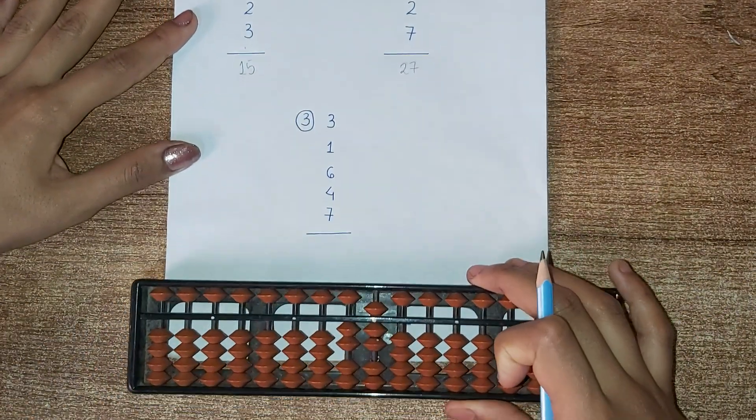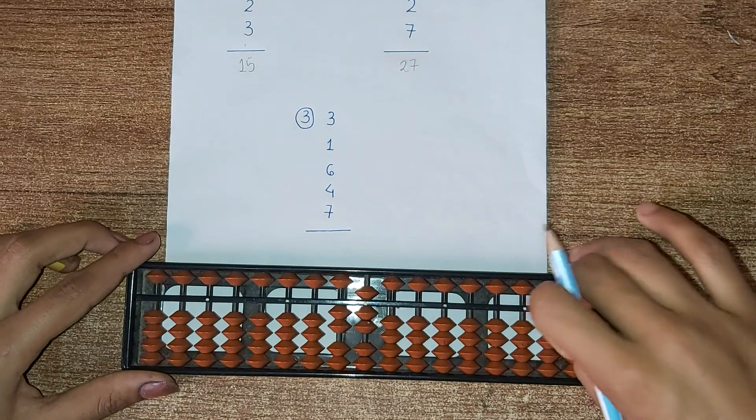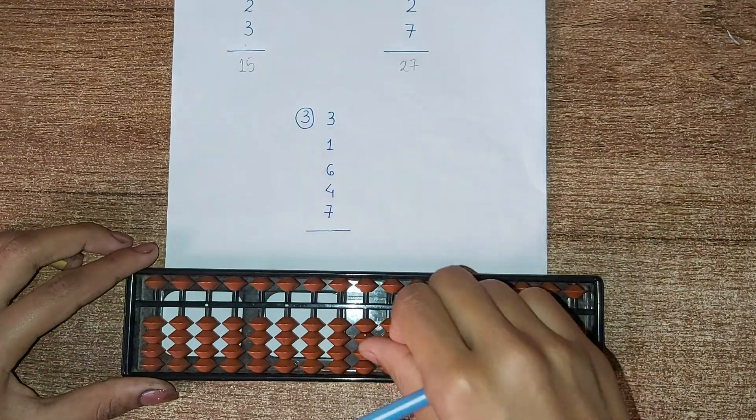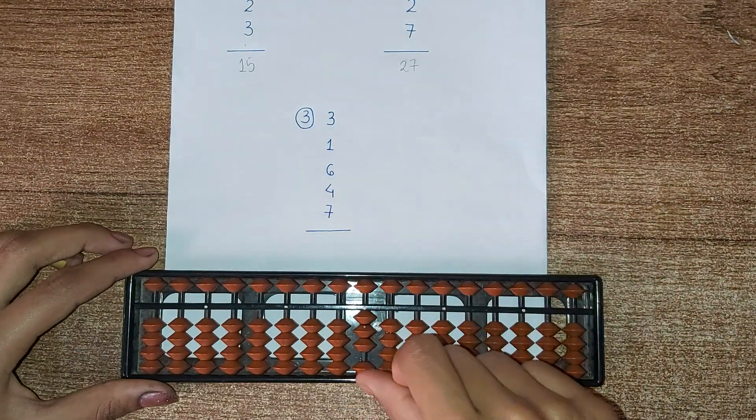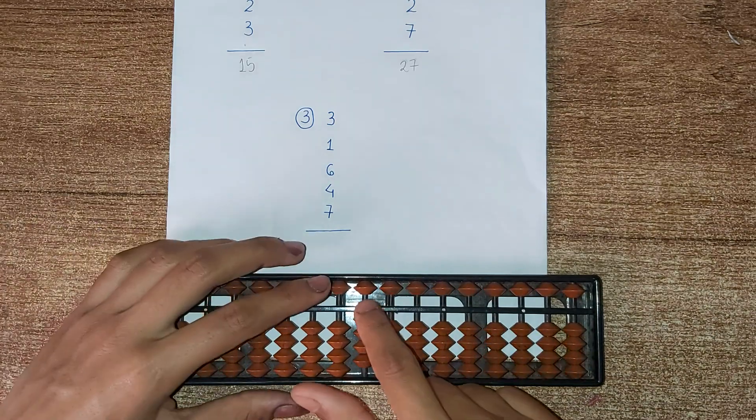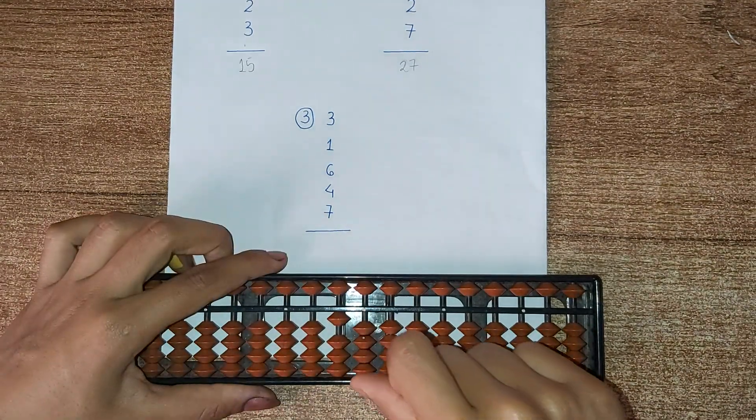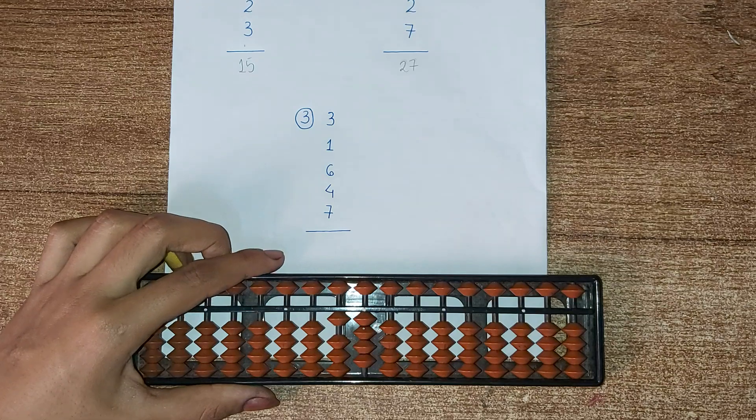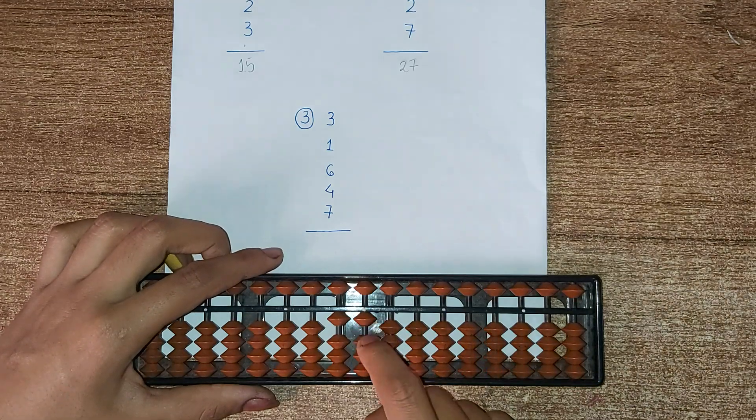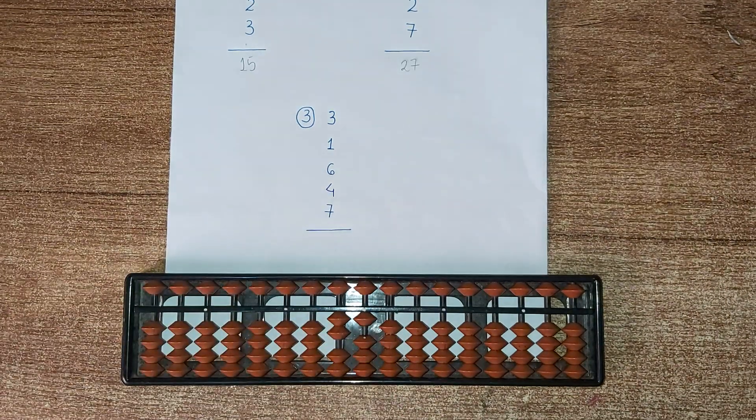Now the third question. 3, then 1. 6 means minus 4 plus 10. Now 4, 7. 7 means minus 3 plus 10 according to big friend formula. So the answer is 21.